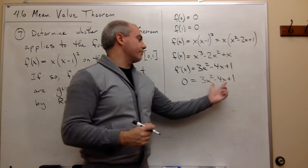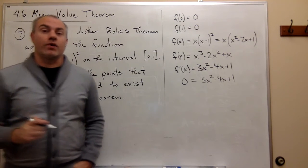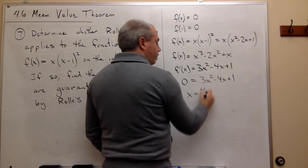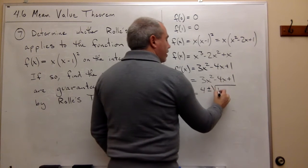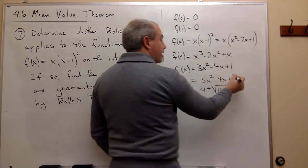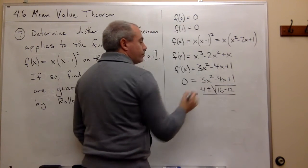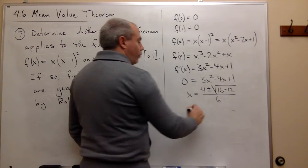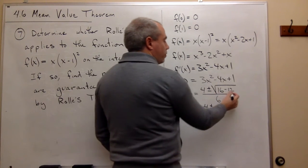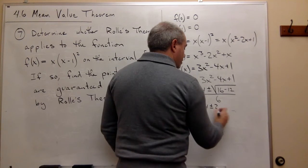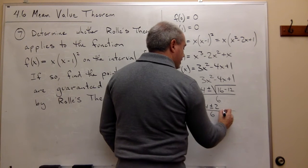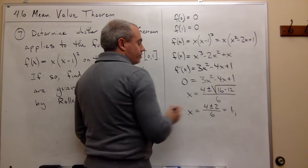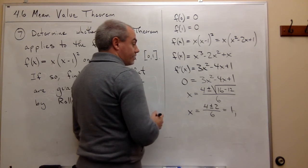And instead of trying to factor this, this doesn't seem like it's going to be the nicest thing to factor. Let's just use the quadratic equation to get the two solutions. So I would get that x would be negative b, which is 4, plus or minus the square root of b², which is 16, minus 4 times 3 times 1, or minus 12, all over 2 times a, or 6. In other words, x would be 4 plus or minus, 16 minus 12 is 4, square root of 4 is 2. So it's 4 plus or minus 2 over 6, which is equal to 6 over 6, or 1. And 4 minus 2 over 6 is 2 over 6, which is a third.